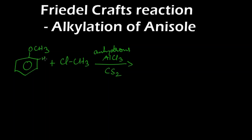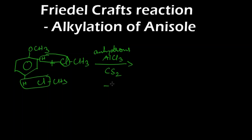At the ortho position there will be one hydrogen, and at the para position there will be a hydrogen. These will leave as HCl. If the reaction takes place at the para position, HCl is also eliminated. So HCl is removed and we get a mixture of ortho and para isomers.